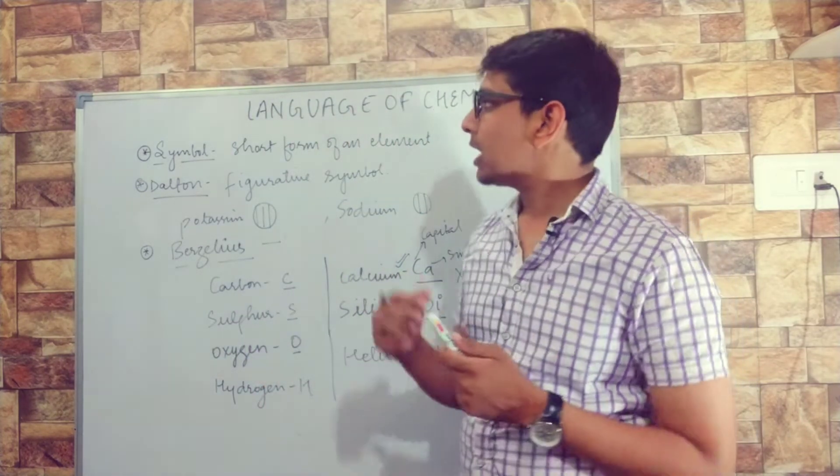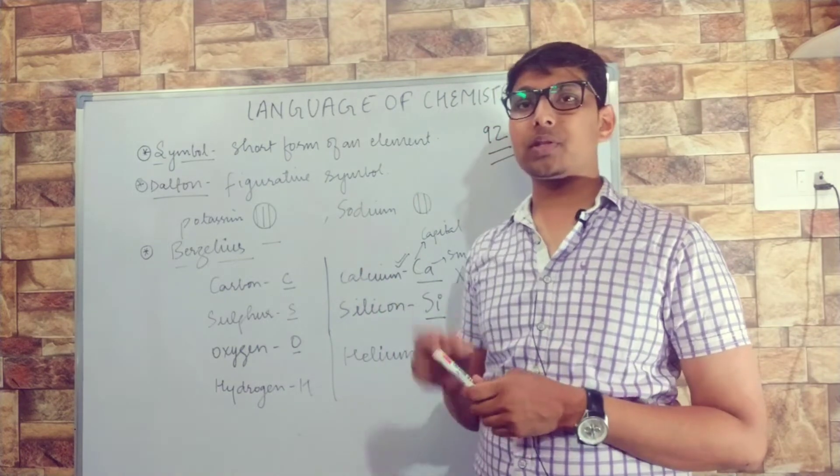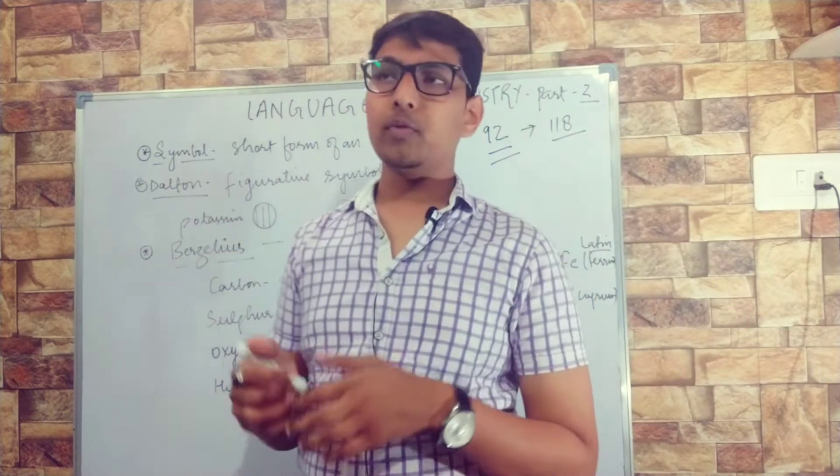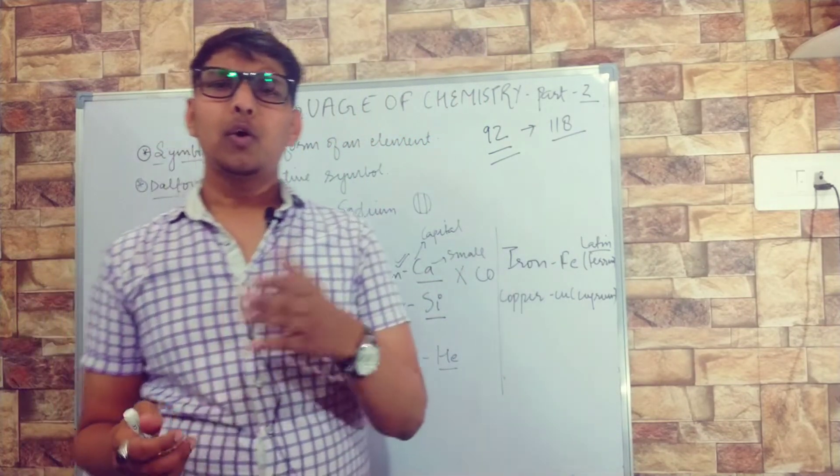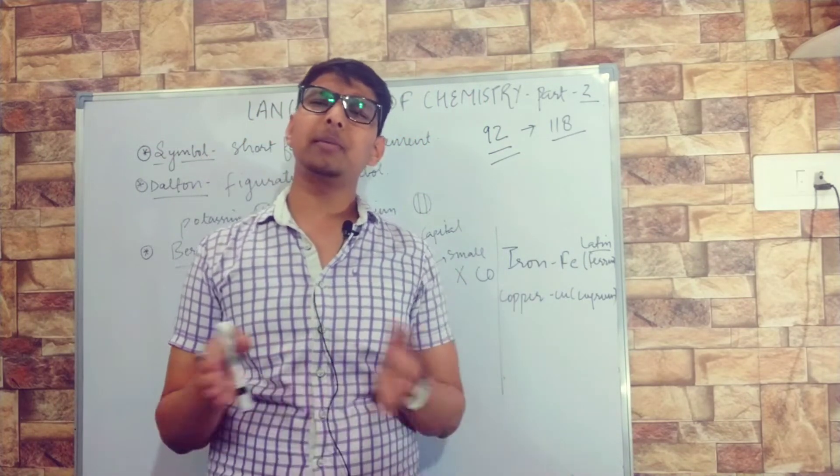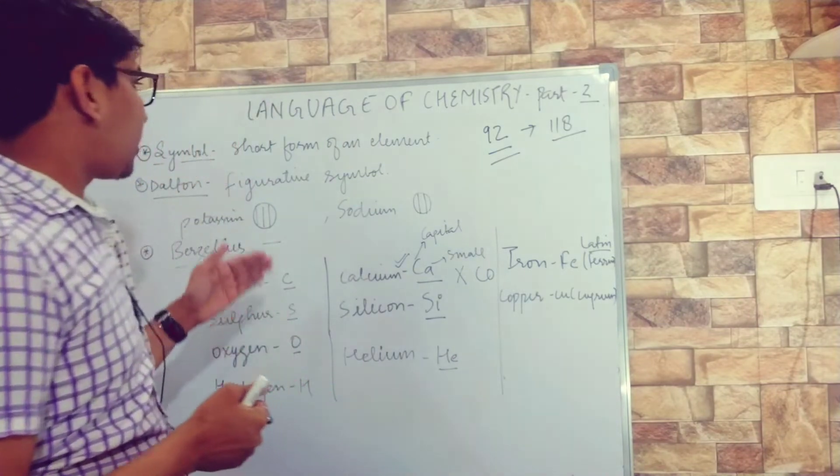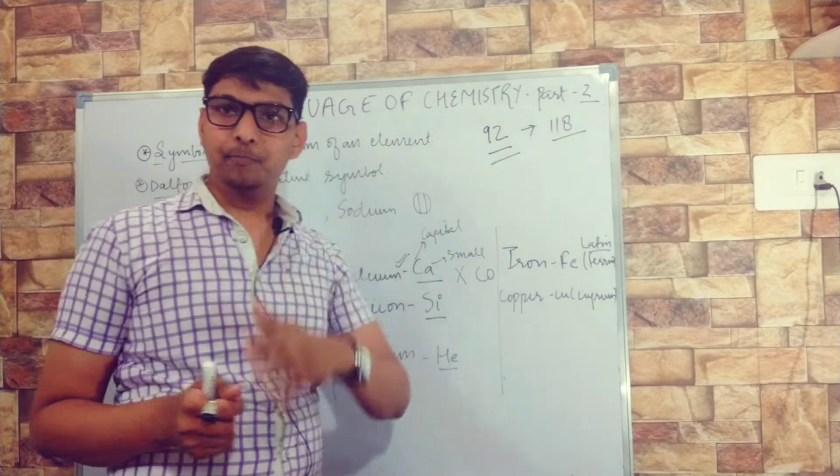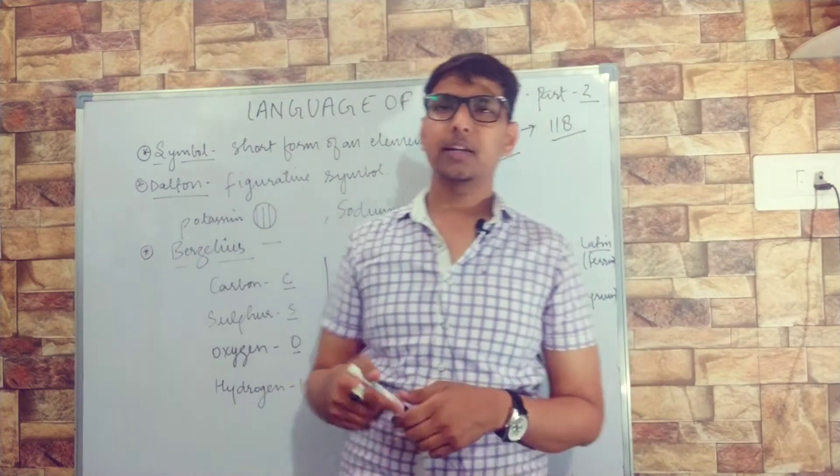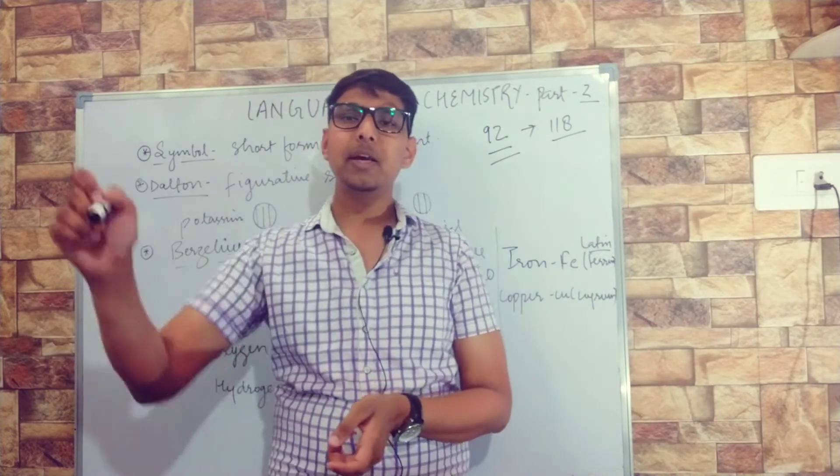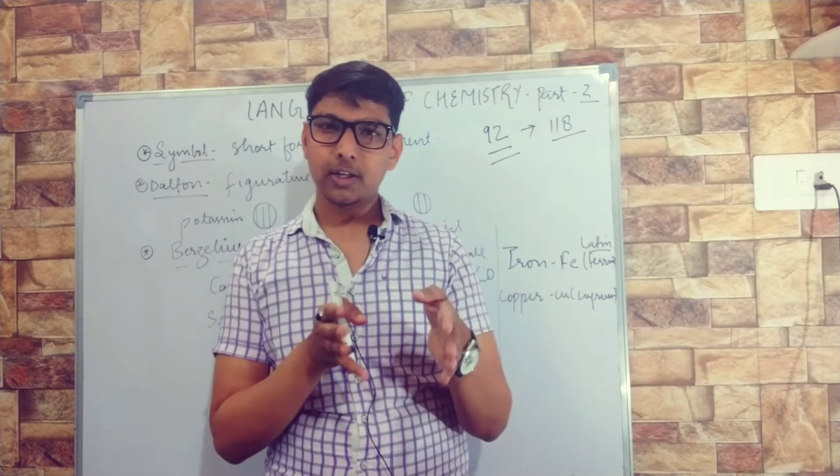In the language of chemistry, the very first thing is symbol. Suppose you know various elements - you must have heard about oxygen, hydrogen, nitrogen, carbon, magnesium, calcium, phosphorus, etc. If we're writing continuously and have to write full names like carbon, silicon, phosphorus, it is time-consuming.